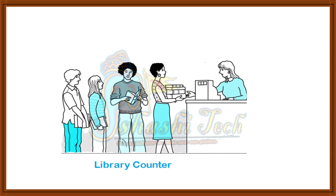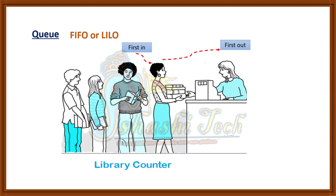One more example is a queue. Suppose you want to borrow a book from the library — you will search for a book and stand in a queue to borrow it. This is a real-time example for the queue. It follows the FIFO or LILO principle. FIFO means first-in, first-out, and last-in, last-out. The person standing first will be served first; the person standing last will be served last.